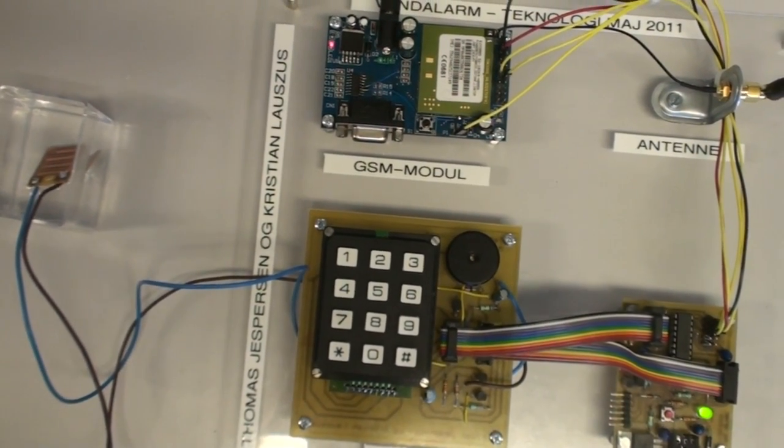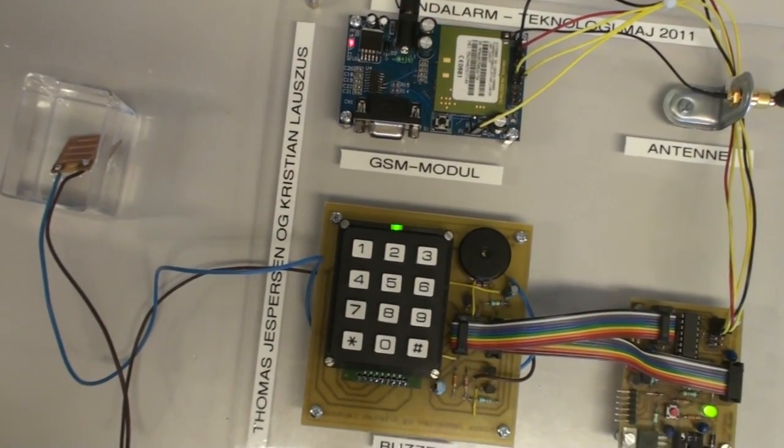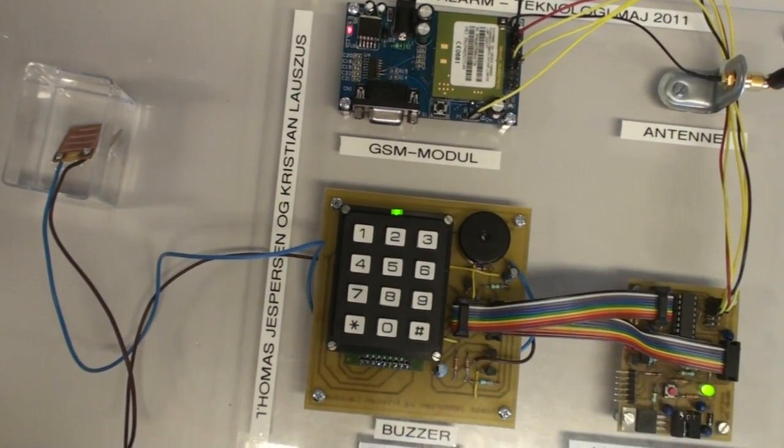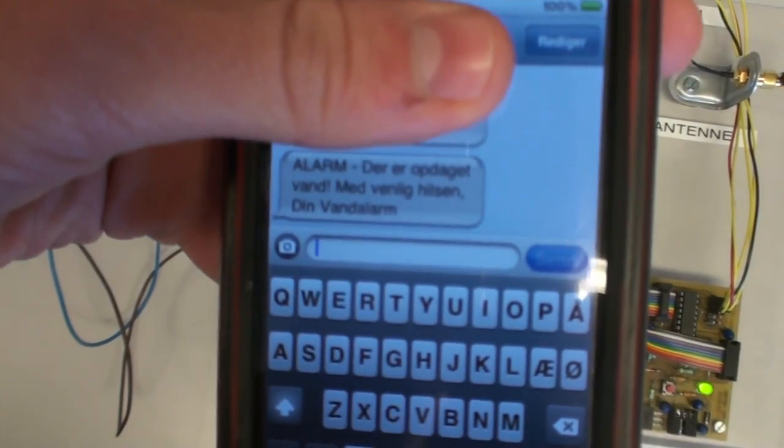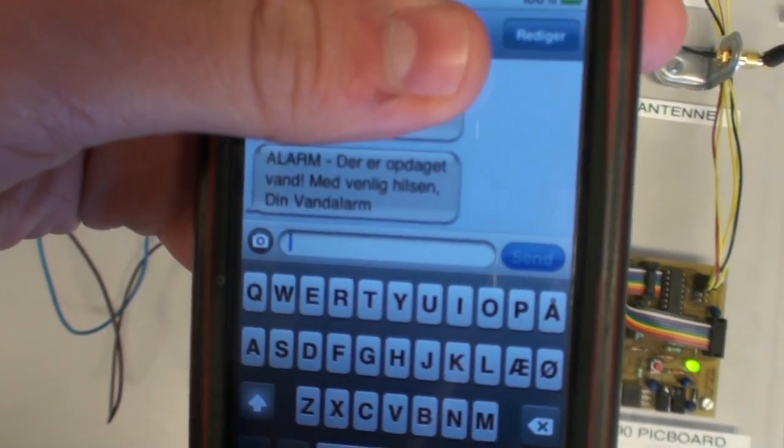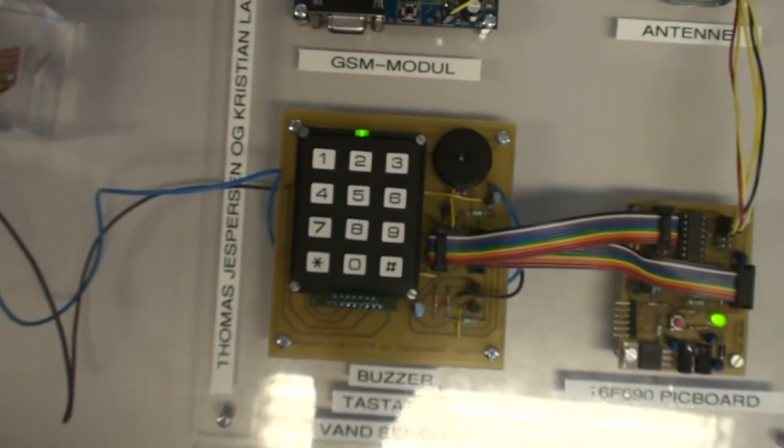Now it stopped blinking and on our telephone we can see the new SMS received with the water alert. The alarm is still on, the LED is on, and the buzzer is still on.